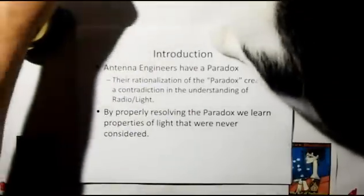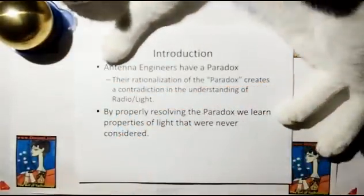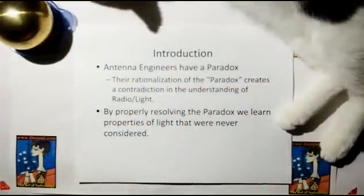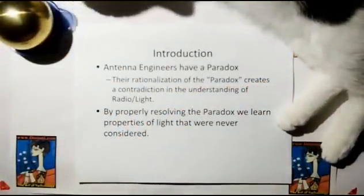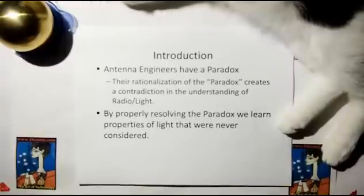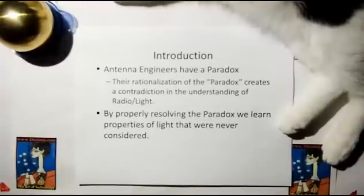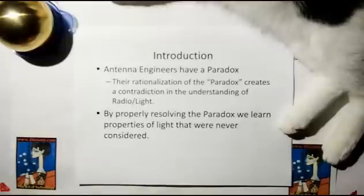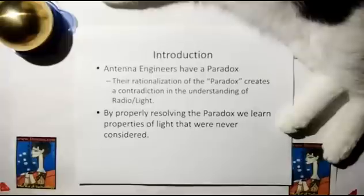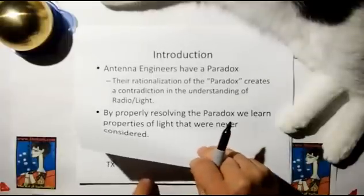So antenna engineers have a paradox on their hands. They rationalize the paradox, their rationalization creates a contradiction in the understanding of radio and light. By properly resolving the paradox we learn properties of light that were never considered.